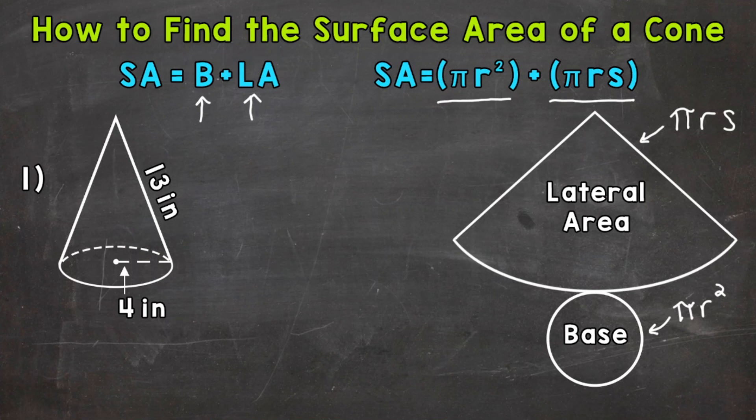So let's jump into our example here, where we have a cone with a base radius of 4 inches and a slant height of 13 inches. And the first thing that we want to do is write out our formula.